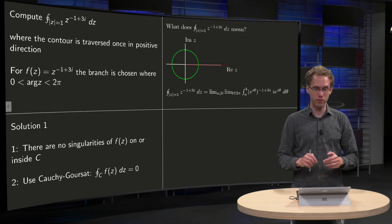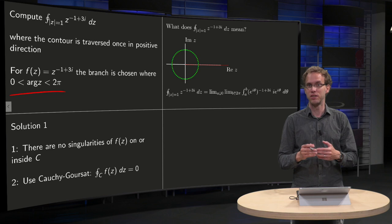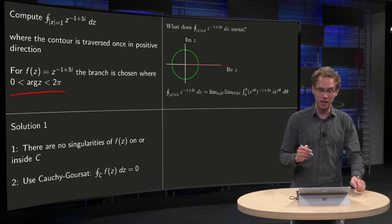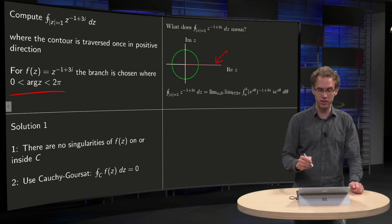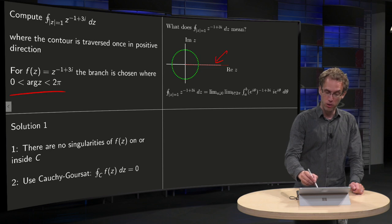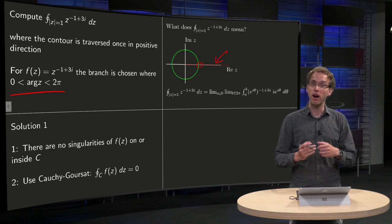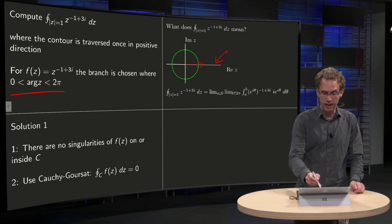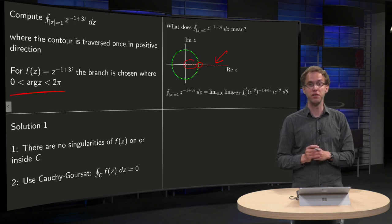Well, there was some information given here about the argument, so we need to do something with that. We have a branch cut over here, along the real axis. So our contour is intersecting the branch cut. What's going wrong is that our function is not analytic inside C, because we have a branch cut over here and that function is not even defined.